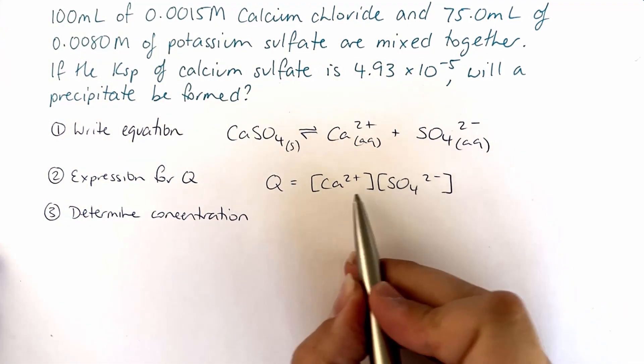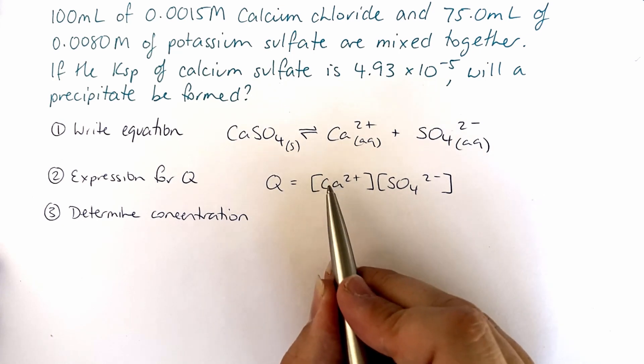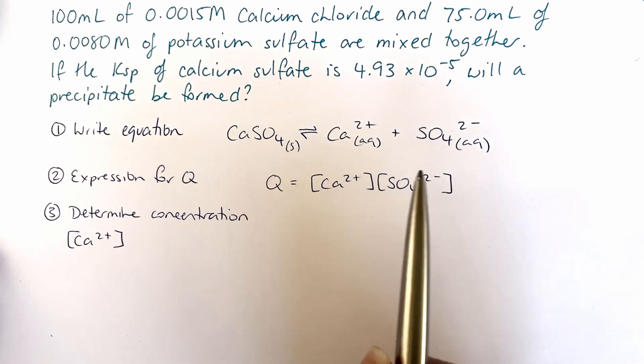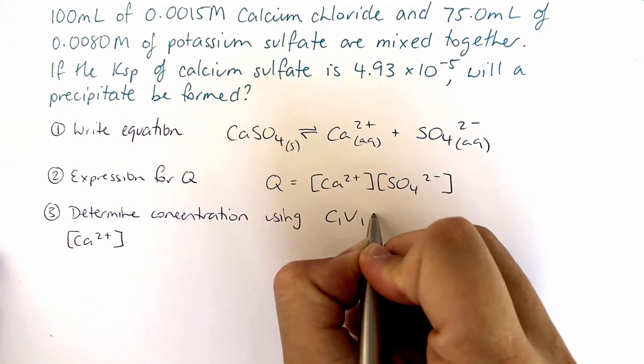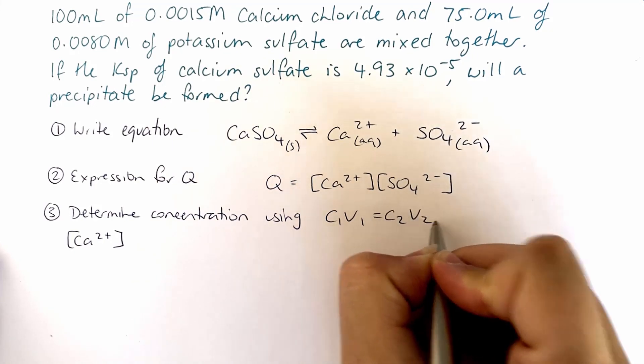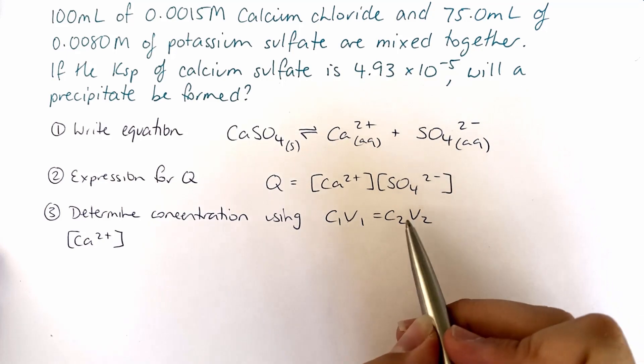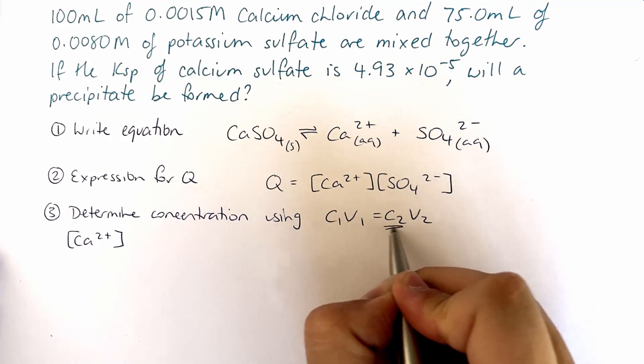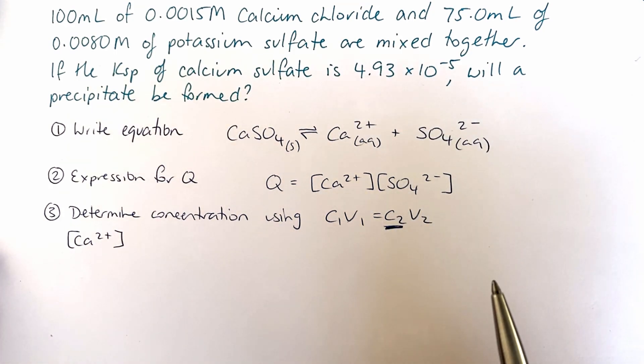So let's start with the calcium. What is our concentration of the calcium? Now to work that out we need to use this formula: C₁V₁ equals C₂V₂. So our initial concentration times volume equals our final concentration times volume. We're looking to find out what is our final concentration and we've been given all of the others or at least can work them out.